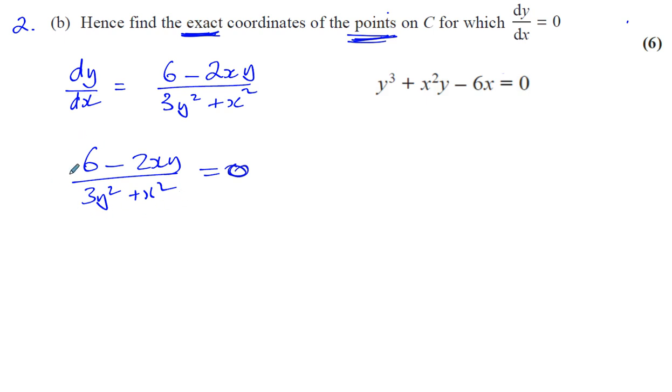On the left side, the denominator will disappear, leaving 6 minus 2xy. On the right side, anything multiplied by 0 becomes 0. That looks simpler now.